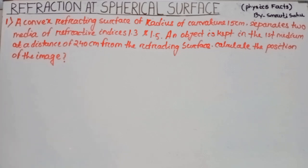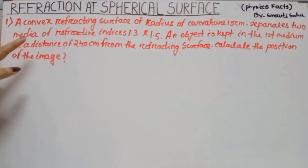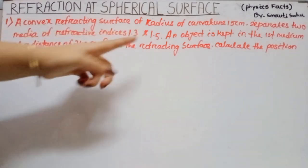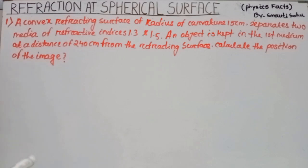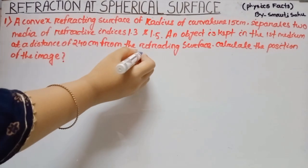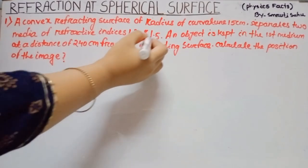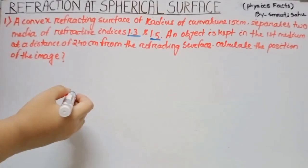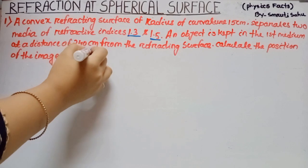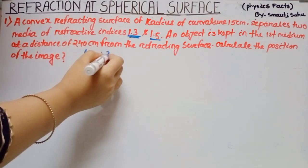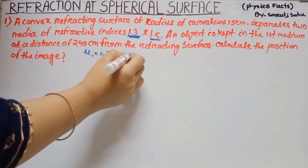Now go to the numericals. Here is the first question. A refractive surface of radius of curvature 15 cm separates two media of refractive index 1.3 and 1.5. The object is kept in the first medium. The first medium has refractive index 1.3 and the second medium has refractive index 1.5. So mu1 equals 1.3 and mu2 equals 1.5.